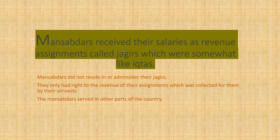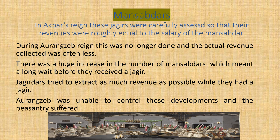The Mansabdars received their salaries as revenue from assignments called Jagirs, which were somewhat like the Iqtas from the previous chapter. However, the Mansabdars did not reside in their Jagirs — they only had the right to the revenue from their assignment, which was collected by their servants, while the Mansabdars served in other parts of the country. We will do a more detailed study about the Mansabdars and the difficulties that happened in later periods in the next volume.